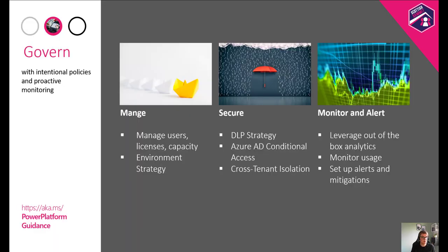Let's now look at the govern bucket. The administration governance bucket ensures that digital guardrails are in place so that makers can confidently create. It means managing environments, managing capacity, managing licenses, securing the platform, and then monitoring resources and usage and setting up alerts to act on specific behaviour. Over the next few minutes, we'll talk about some of the best practices, especially when it comes to setting up an environment strategy and setting up DLP policies.